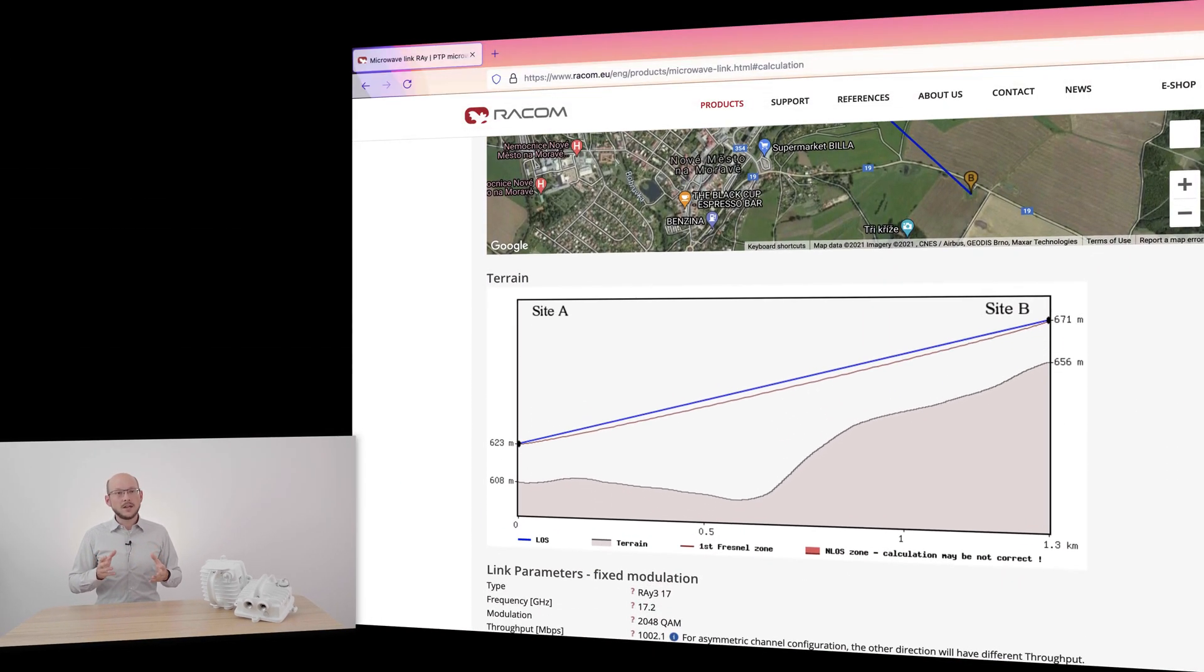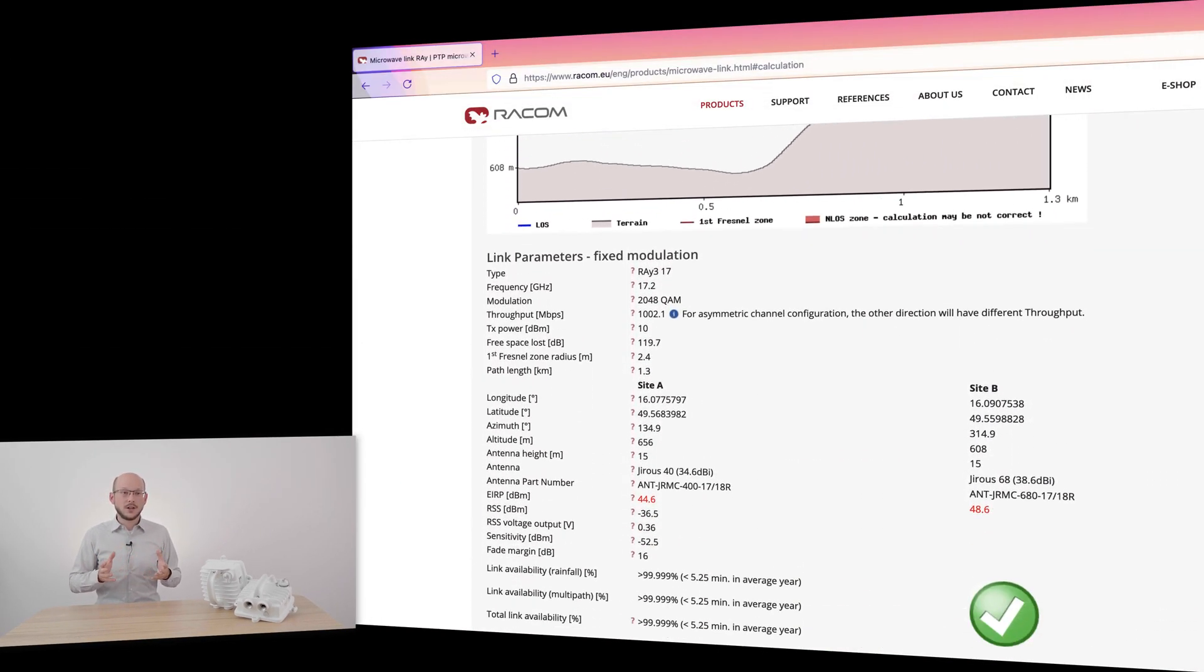Finally, you will need a link calculation containing target RSS and the first Fresnel zone. You may use calculation tool at raycom.eu for rough calculations.